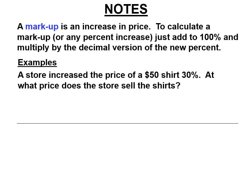So a markup is an increase in price. So we can add the price to 100%. So a store increased the price of a $50 shirt 30%. At what price does the store sell the shirt? So we're going to do it two ways. But the easy way, if you can do 100% plus 30% in your head and get 130% and then make that a decimal, you can do all this in your head and realize all we have to do is multiply by 1.3. So you do 50 times 1.3. 3 times 0, 3 times 5 is 15. Step over, 1 times 0, 1 times 5. Move the decimal once. And they're going to sell it to you for $65.